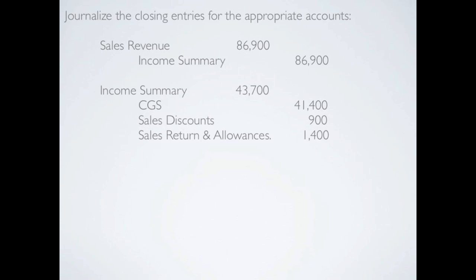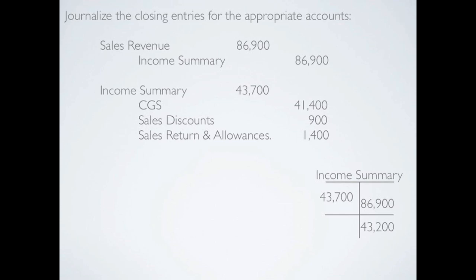Now we need to close our income summary to retained earnings. Looking at our numbers, the income summary has a credit balance of $86,900 and a debit balance of $43,700, so I know we're going to have net income because credits outweigh debits. The income summary carries a credit balance of $43,200. To get rid of that I debit the income summary for $43,200 and credit retained earnings for $43,200.